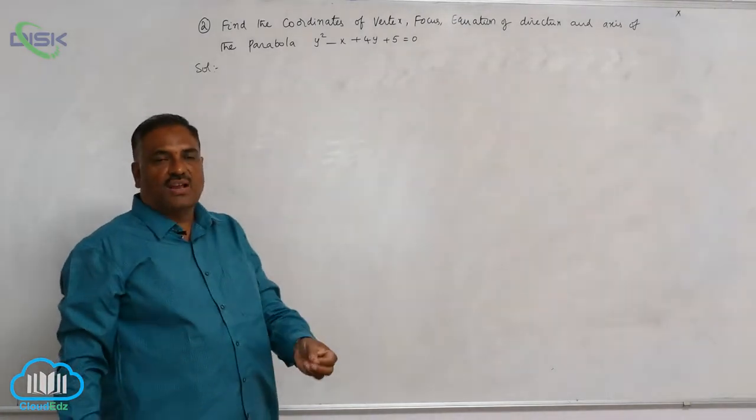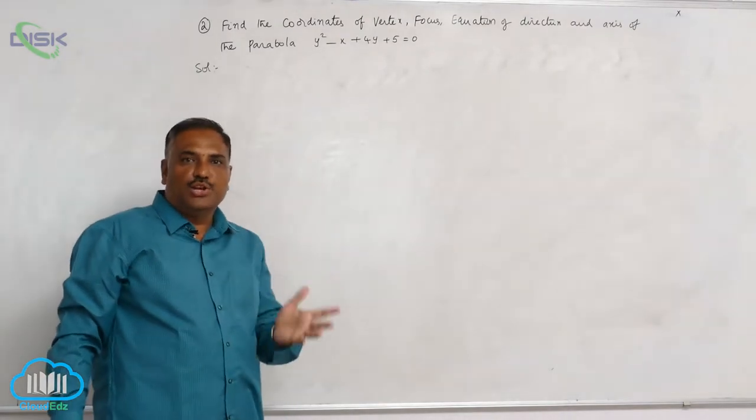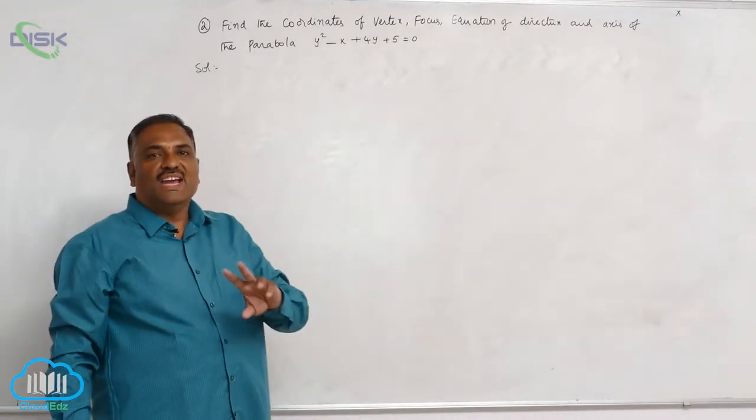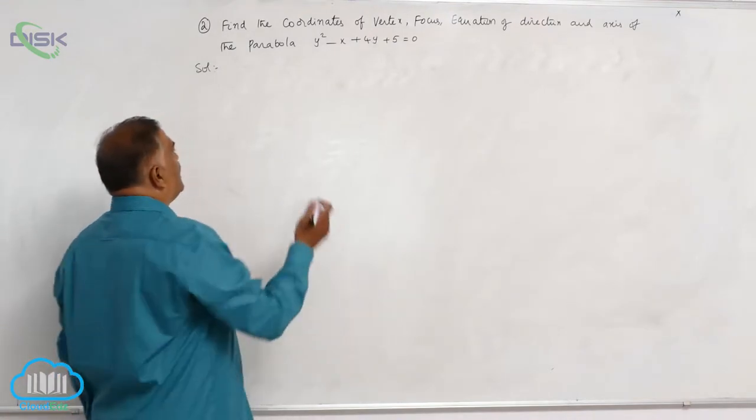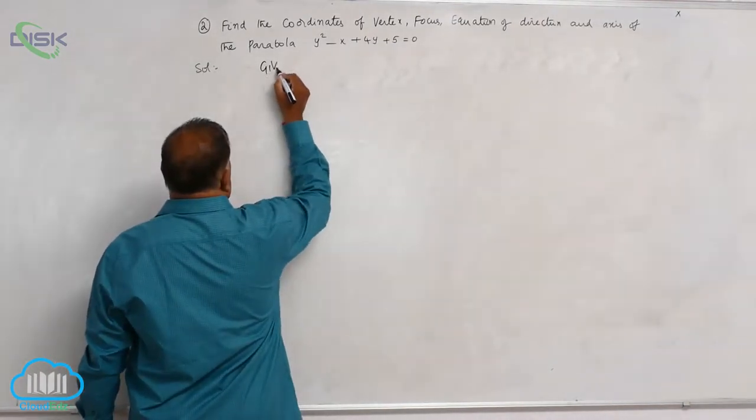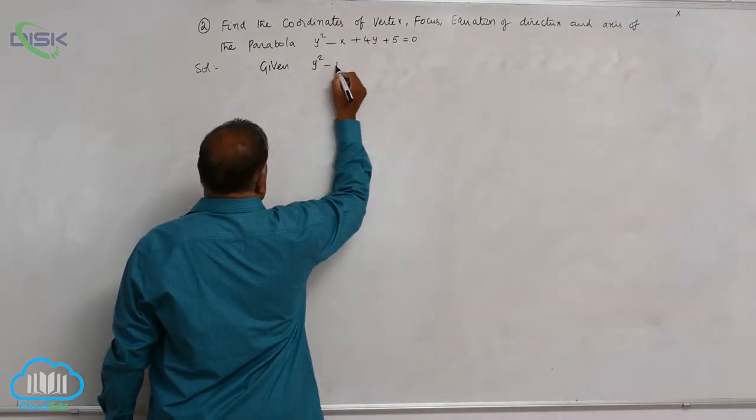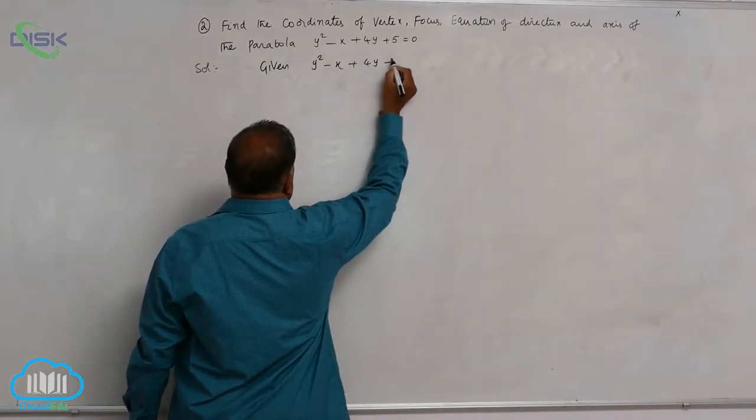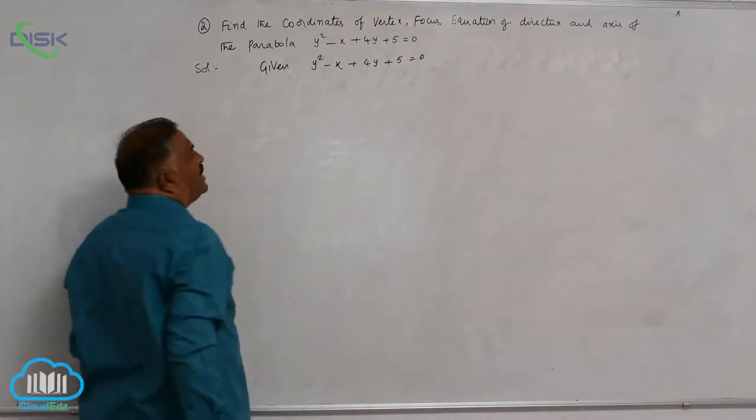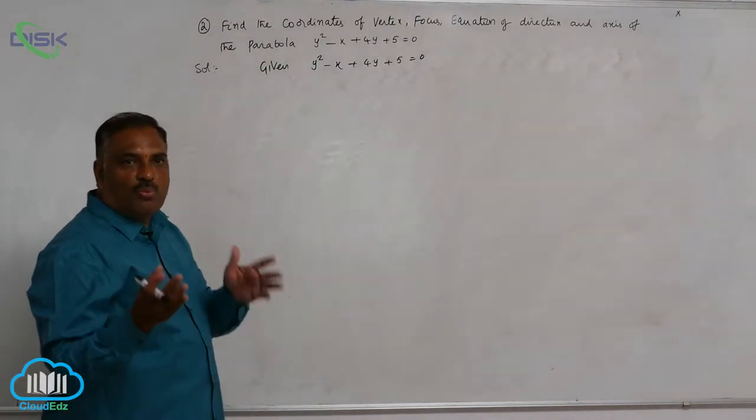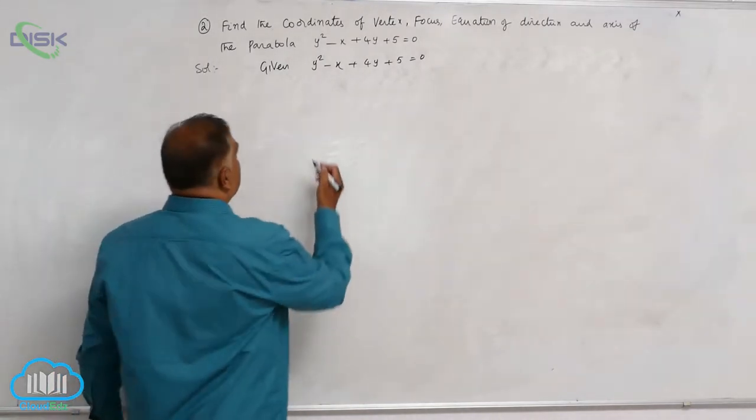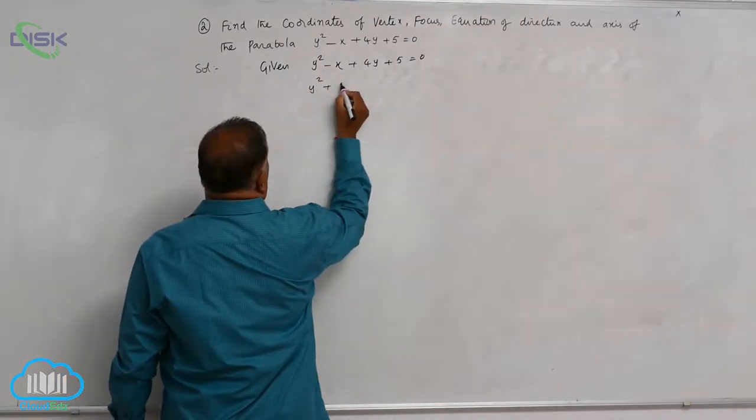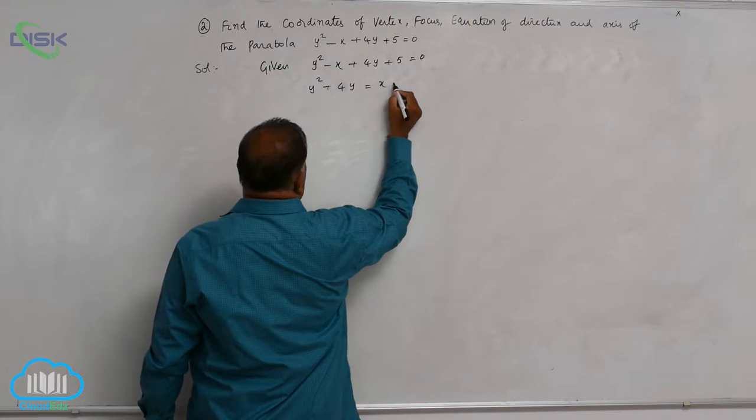First of all, the given equation is reduced to one of the eight forms of parabola. Given parabola is y square minus x plus 4y plus 5 is equal to 0. Keep y terms to one side and other terms to the other side. This is y square plus 4y is equal to x minus 5.